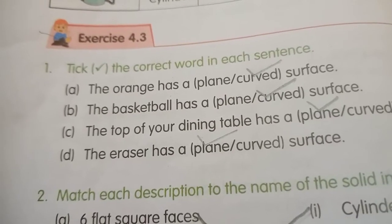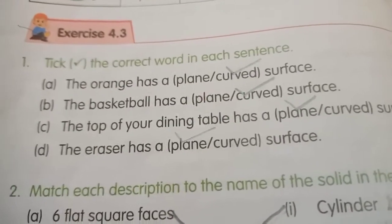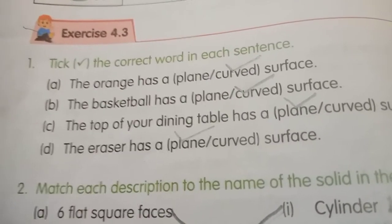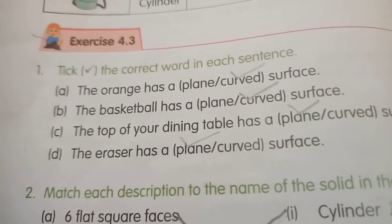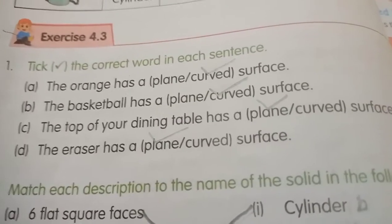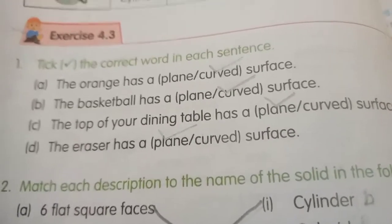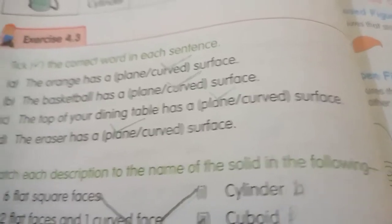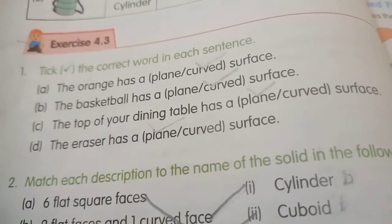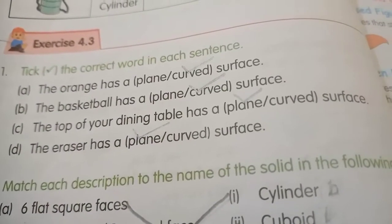First question: tick the correct word in each sentence. The orange has a curved surface. The basketball has a curved surface. The top of your dining table has a plane surface. The eraser has a plane surface.